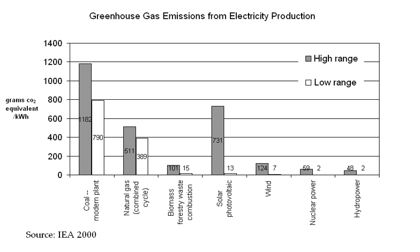Alternatives to electrification include decarbonizing pipeline gas through power-to-gas, biogas, or other carbon-neutral fuels. A 2015 study by Energy Plus Environmental Economics shows that a hybrid approach of decarbonizing pipeline gas, electrification, and energy efficiency can meet carbon reduction goals at a similar cost as only electrification and energy efficiency in Southern California.